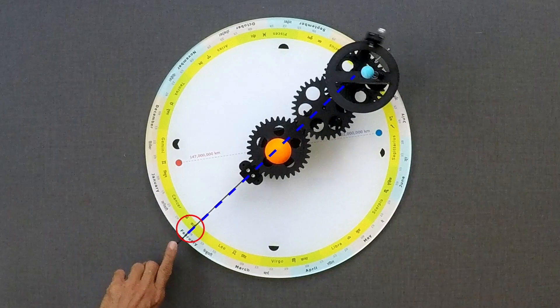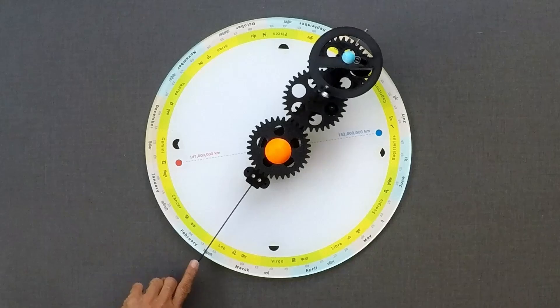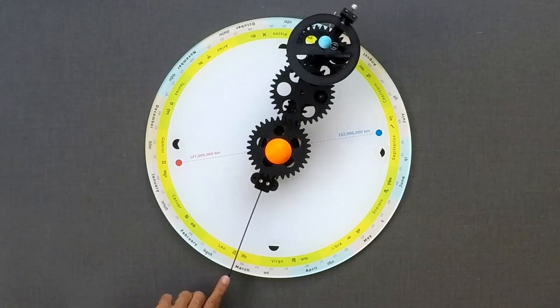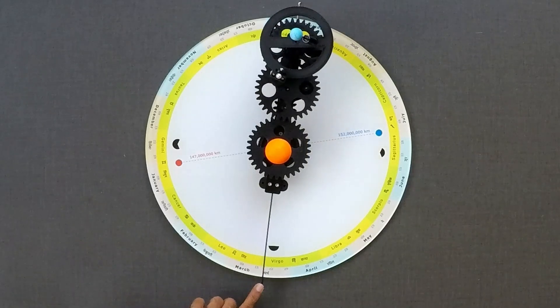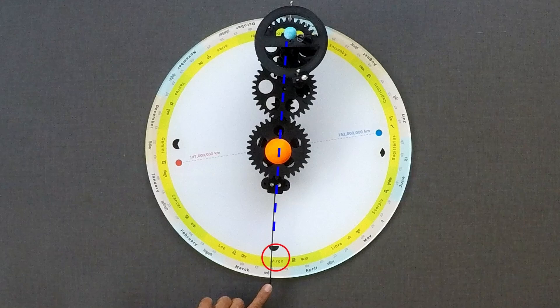Now, sun is in Cancer. And now, sun is in Virgo.